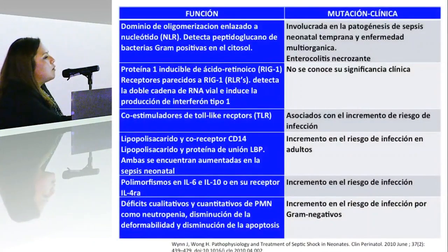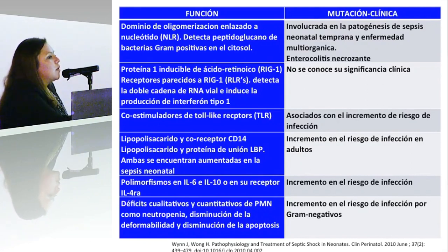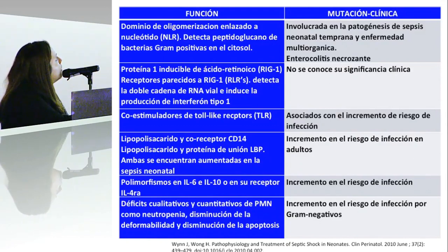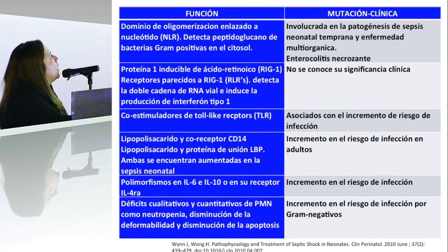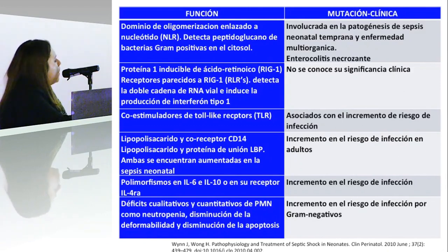En este trabajo de Winnie Wong en el 2010, ellos intentaron buscar si alguna de las alteraciones inmunológicas en los recién nacidos prematuros tenían explicación sobre las manifestaciones o el riesgo incrementado de sepsis. Encontraron alteraciones que van desde una alteración en detectar el péptido glucano de las bacterias gram-positivas, alteraciones en los Toll-like receptors, déficits cualitativos y cuantitativos de polimorfonucleares, como neutropenia, disminución de la deformabilidad y disminución de la apoptosis de estos neutrófilos.